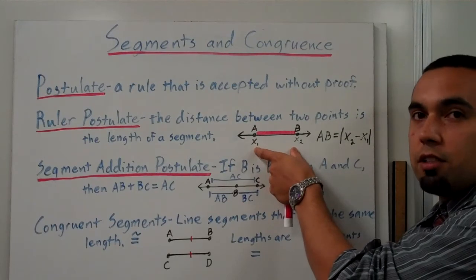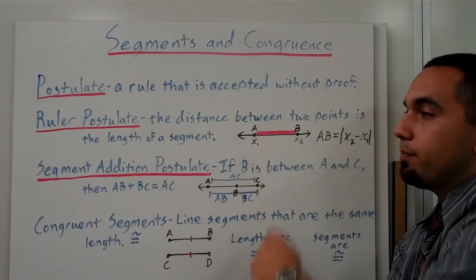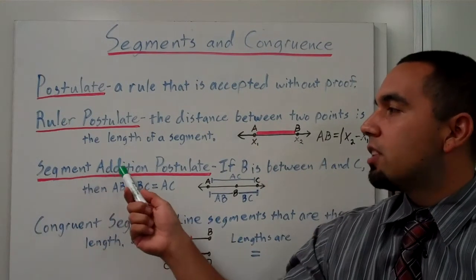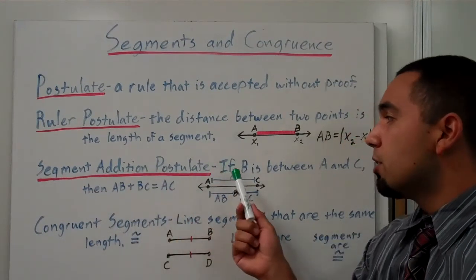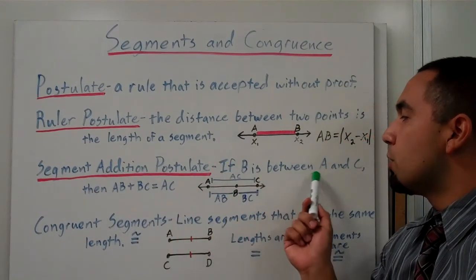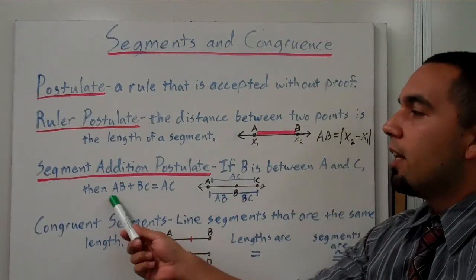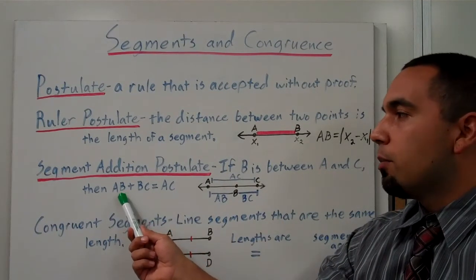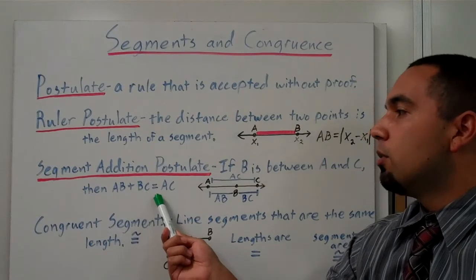We also have the segment addition postulate. This one says if B is between A and C, then the length of AB plus the length of BC will always equal the length of AC.